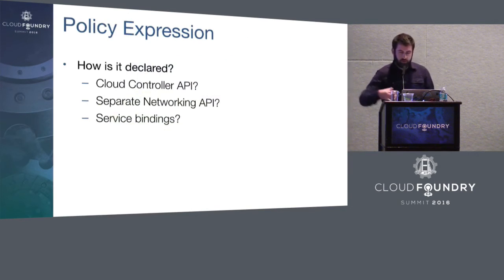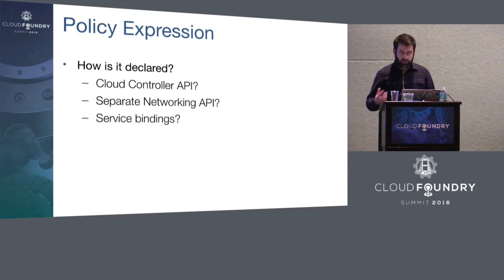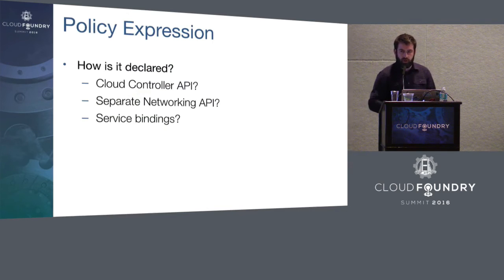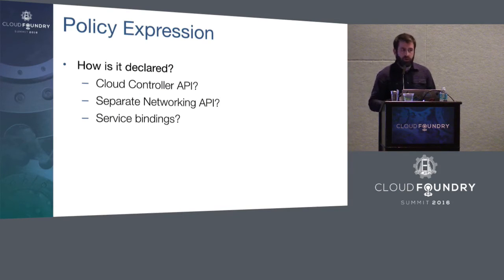In addition to those high-level concepts, there's the question of where this stuff actually gets stored. Does a user put this into the Cloud Controller API? Is there going to be some separate networking API that controls this? Maybe they express it via the service model for Cloud Foundry with service bindings. We've talked about and thought about these approaches. We haven't made any firm decisions yet, and we're looking for feedback.